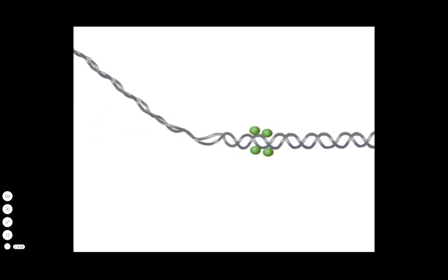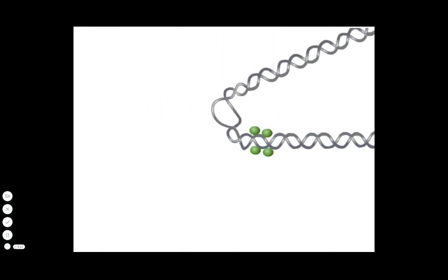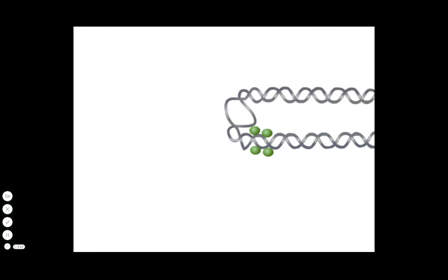The binding distorts the DNA leading to the opening of adjacent 13 base pair repeats in the DNA. The opening in the DNA allows protein complexes to enter the replication bubble and bind to the single stranded DNA.